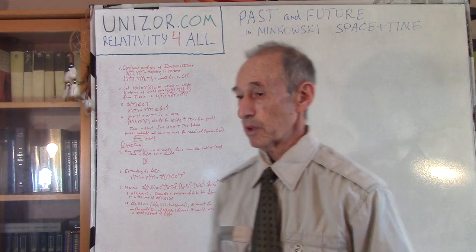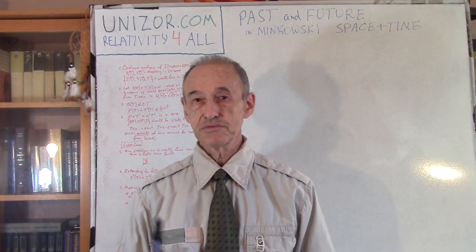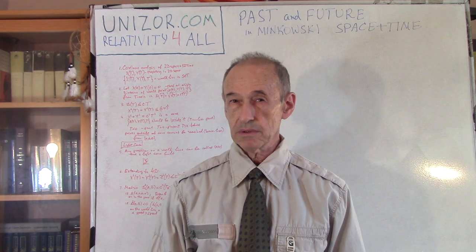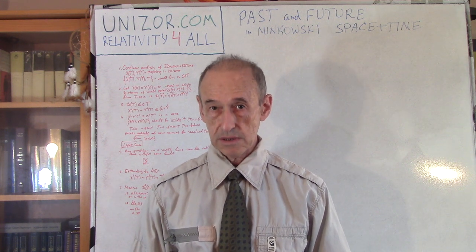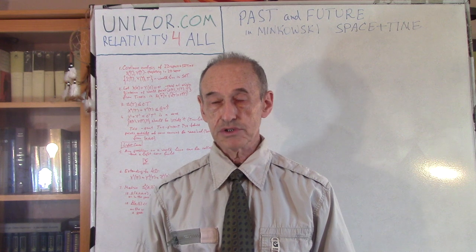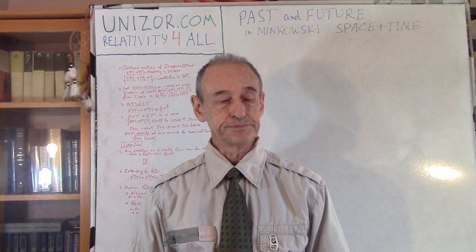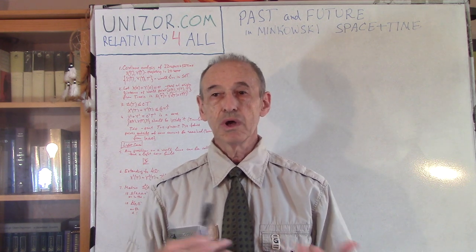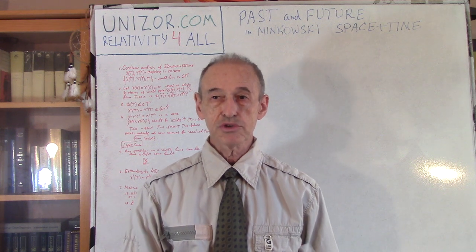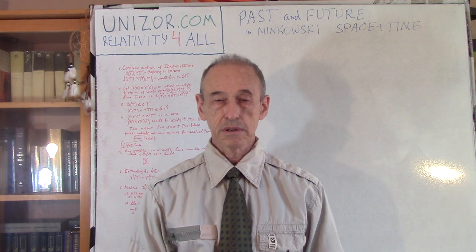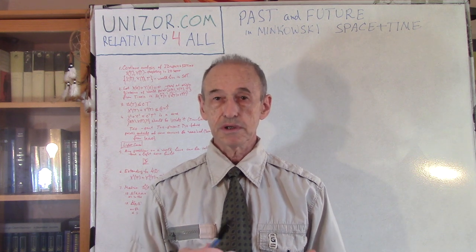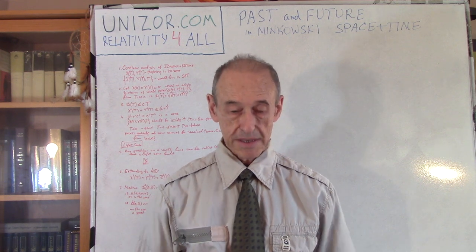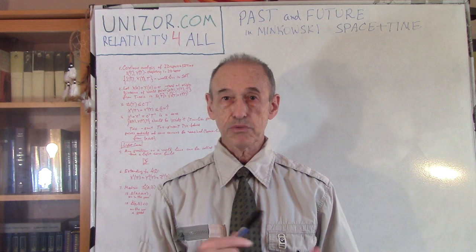Today we continue talking about Minkowski's view of the theory of relativity, which came in 1907, just a couple of years after Einstein introduced the special theory of relativity in his 1905 paper. It presents a more geometrical view of relativity. In the previous lecture we studied the concept of Minkowski four-dimensional spacetime, which contains our three-dimensional space plus one-dimensional time — four-dimensional spacetime.